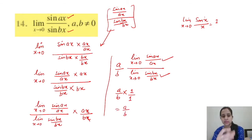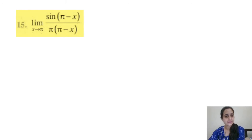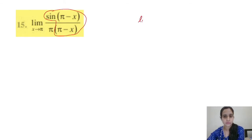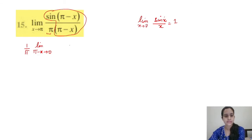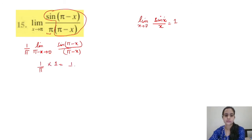Question 15: limit x tends to π, sin(π − x)/(π(π − x)). Recognizing the structure: this looks like sin(π − x)/(π − x) which follows the sin θ/θ → 1 format. Let θ = π − x; when x → π, θ → 0. Taking 1/π as constant outside: (1/π) × limit(π−x)→0 of sin(π − x)/(π − x) = (1/π) × 1. The answer is 1/π.